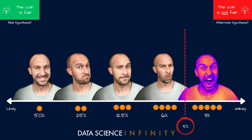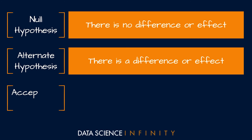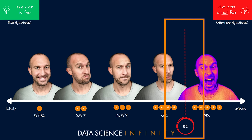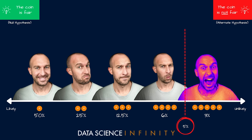Finally, the third thing needed for a hypothesis test is an acceptance criteria — the pre-specified threshold that decides the most likely hypothesis. In our example, this was the line in the sand we drew before looking at the data. This acceptance criteria can be set to any value we like, but a common convention is five percent, like we used here, or what you'll often see written as 0.05.